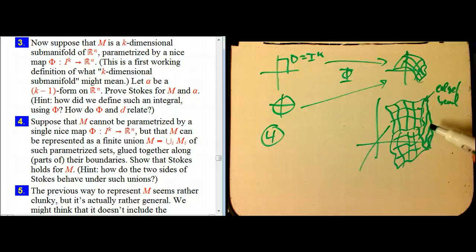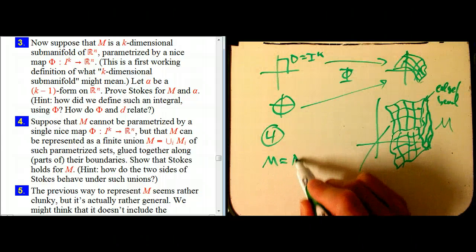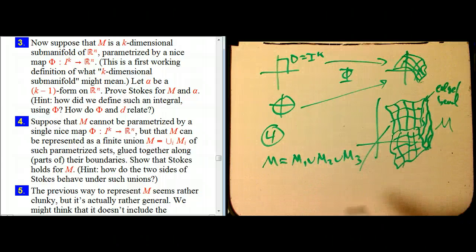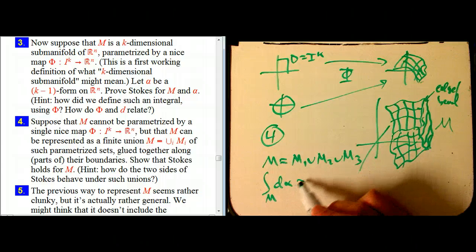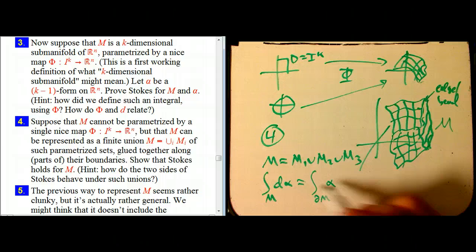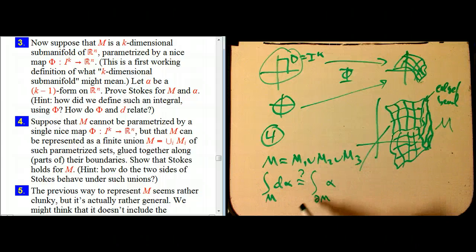And maybe it's a whole wiggly kind of cube. And after all, if we can't do wiggly cubes, this thing is not working very well. Well, the key is that that's just a bunch of pieces. If this whole thing is M, then M, in that case, would be M1 union M2 union M3. And we'd like to know, is it true that the integral over M of D alpha, the whole thing, is the integral of the boundary of alpha? Is that still true, even though M isn't just the image of one single unit cube?